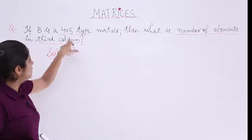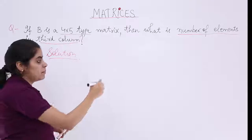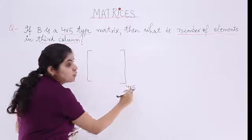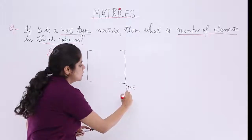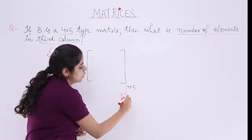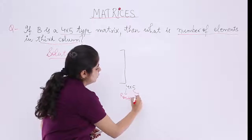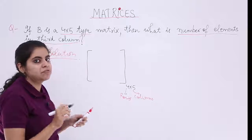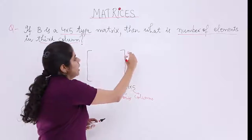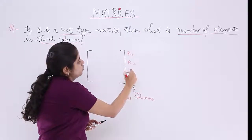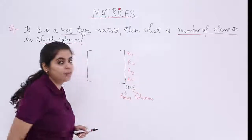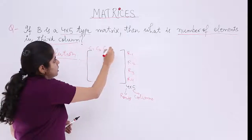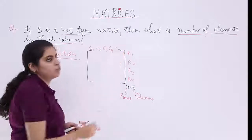Now the matrix is a 4 by 5 type matrix. That means there have to be how many rows? 4. Because the first denotes rows, the second thing denotes columns. So there have to be 4 rows and 5 columns. So it is R1, R2, R3, R4 and 5 columns. C1, C2, C3, C4 and C5.